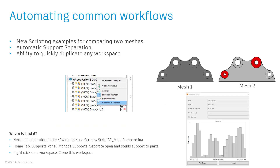The final improvement in usability was around automating common workflows. We added three new improvements. The first is an entirely new example script that allows you to compare similar meshes. The second is automating the support separation action. The third is the ability to quickly duplicate any work phase. The mesh compare automatically points out differences between two meshes with a color representation and a graph. Automatic support separation allows you to separate open and solid supports into two parts for better control when assigning toolpath parameters.